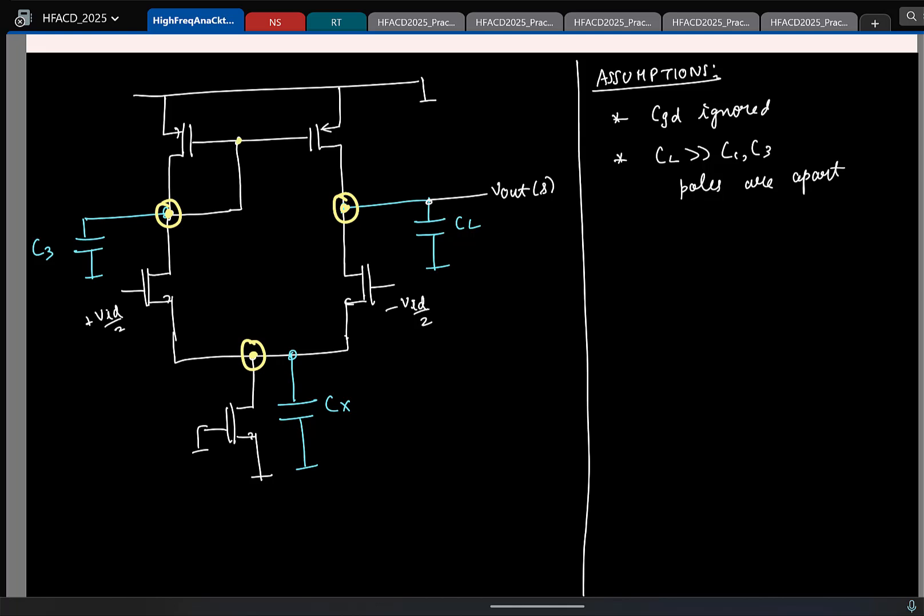Using that, we computed the poles. Now, to simplify the calculation of zeros, what did I assume further? R0 of the NMOS I had ignored. The moment I do that, we saw this node voltage Vx was zero in the differential mode. This is in differential mode. That needs to be clear. We will only focus on differential mode.